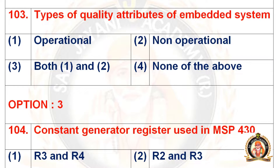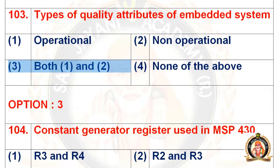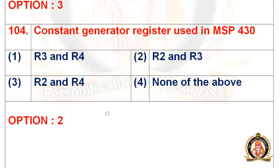Question 103: The types of quality attributes of embedded system. The options are operational, non-operational, both 1 and 2, and none of the above. The right option for question 103 is option number 3, that is both operational and non-operational.